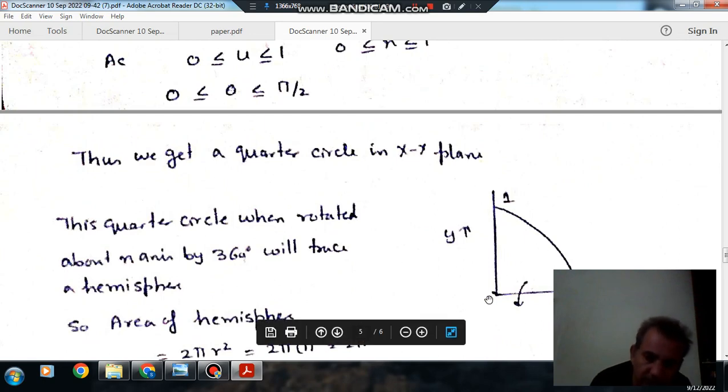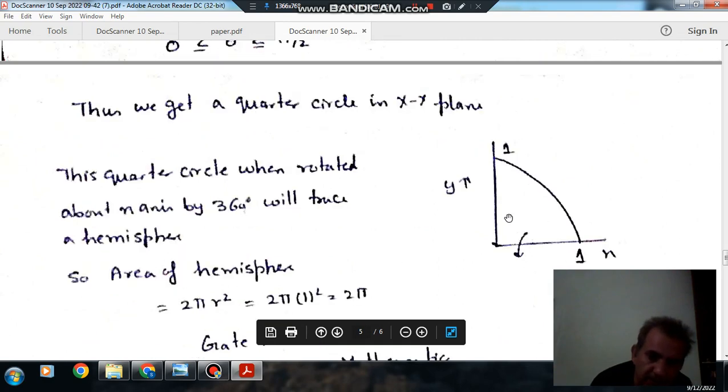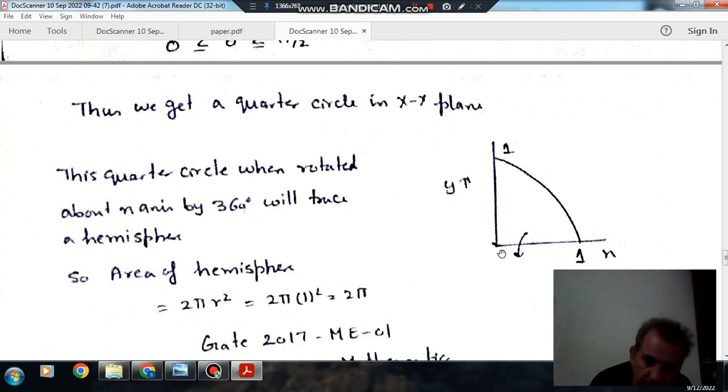Now this circle is rotated about the x-axis, so it will form a hemisphere. And the area of a hemisphere we know is 2πr².